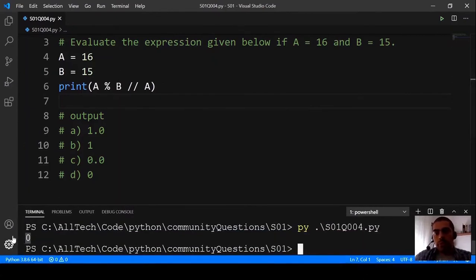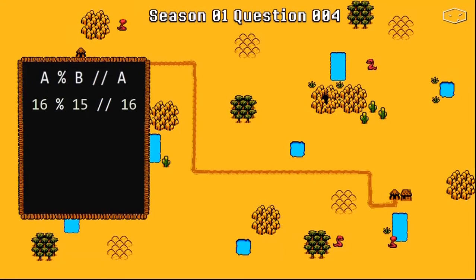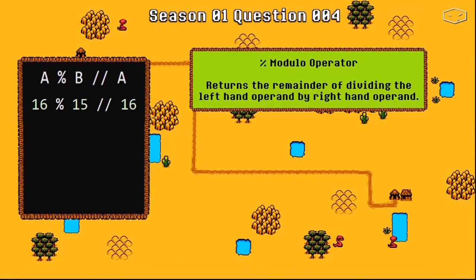And the result is D, 0. Let's understand this. The first operator is the modulo operator. It returns the remainder of dividing the left hand operand by the right hand operand. Let's see this example: 7 modulo 2 equals 1.